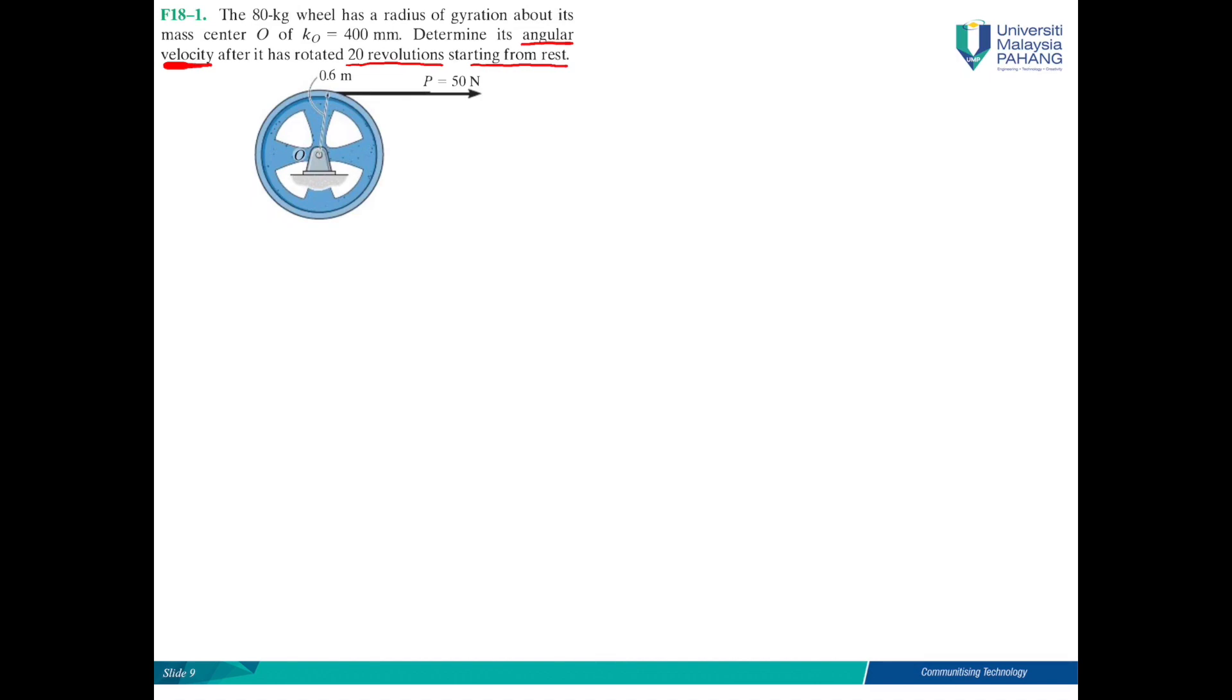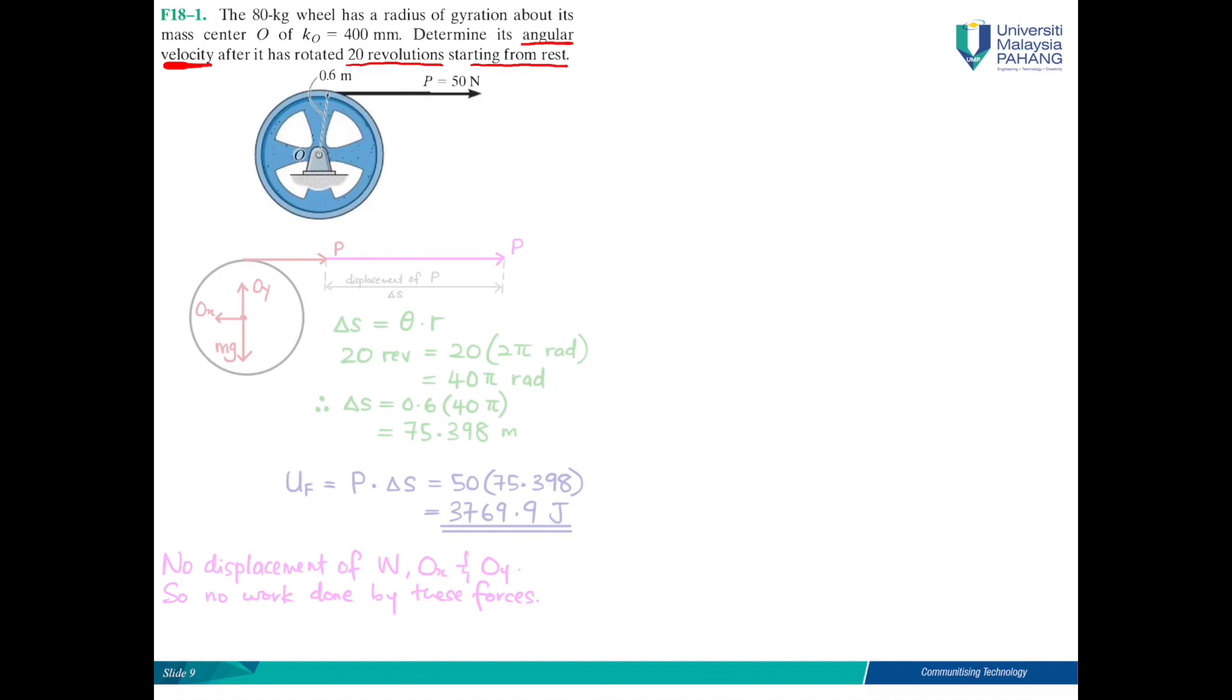Of how to calculate the work done by a moving rigid body. So in this case, if we draw the free body diagram, we will know that the displacement of point P is like this.